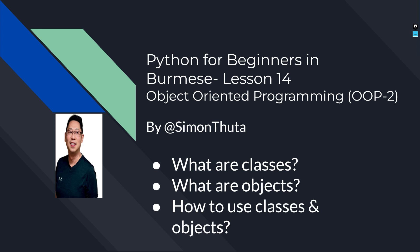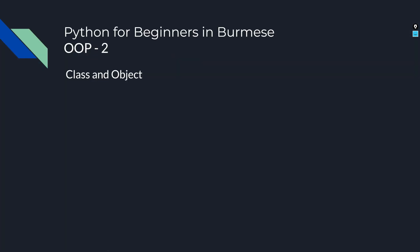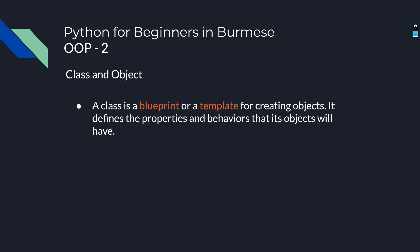In Object Oriented Programming, a class is a blueprint or a template for creating objects. It defines the properties and behaviors that its objects will have.